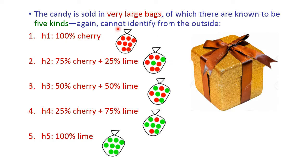The candies are packed in a very large bag, like a marble chocolate bag, so we cannot see the combination of candies inside. There are five different combinations: hypothesis h1 is 100% cherry; h2 is 75% cherry and 25% lime; h3 is 50% cherry and 50% lime; h4 is 25% cherry and 75% lime; and h5 is 100% lime. We cannot identify from outside which combination is in the bag.